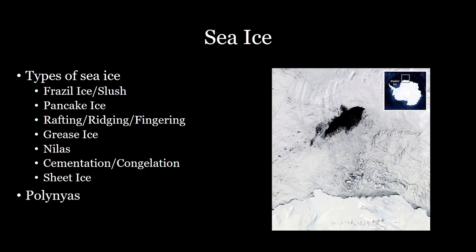Sometimes when you have a warm pocket of water develop, you can melt away a hole and form what's known as a polynya. These are really important because that warm water is generally very productive, and you have a lot of sea life congregating in polynyas with a lot of ecosystem productivity developing.